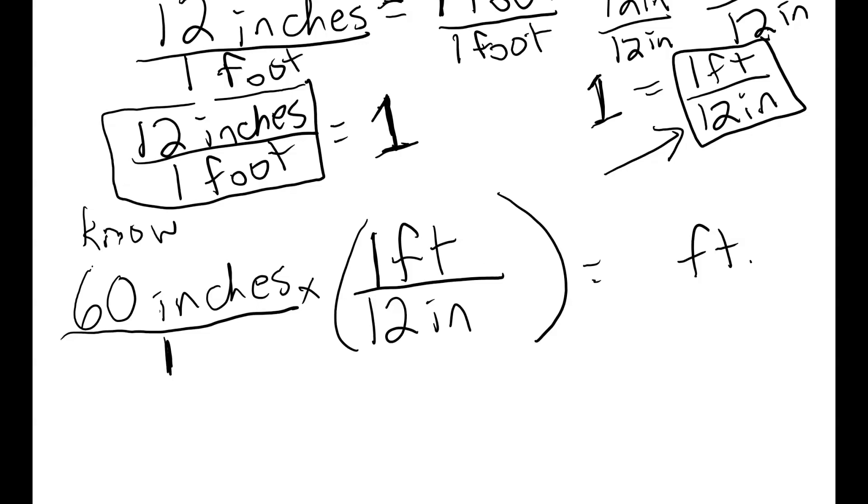If I multiply through, I have inches on the top here, inches on the bottom, so those are both going to cancel out. If we have the same unit on the top and the bottom of a fraction, it's going to cancel. 60 times 1 divided by 12, so I have 60 divided by 12 feet. I can do the math on this. 60 divided by 12 gives me 5 feet.